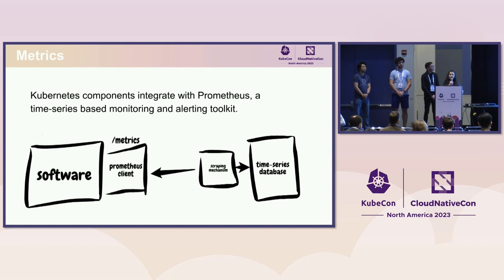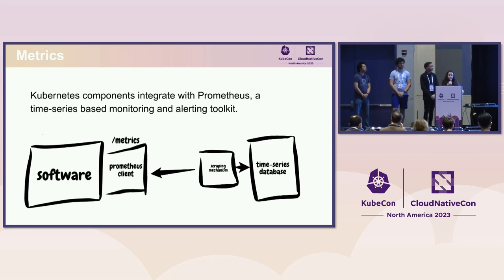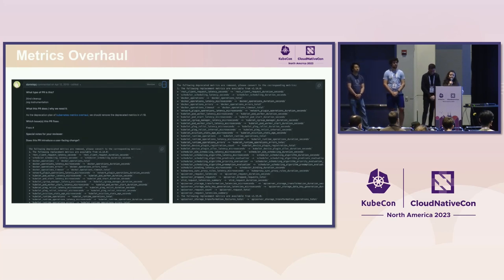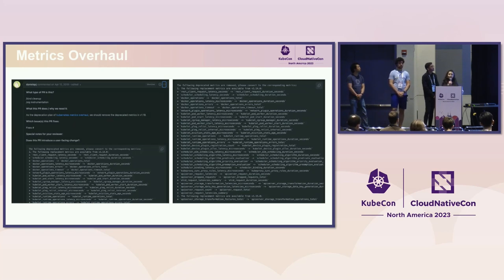Because Prometheus has a client-server architecture, Kubernetes components are instrumented using Prometheus client libraries, and the metrics are exposed via HTTP on a /metrics endpoint that is text-based. Before I jump into one of the bigger projects under SIG instrumentation's metrics arena, I wanted to give a bit of context.